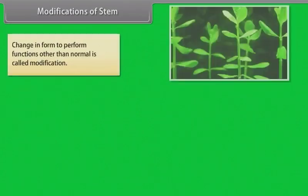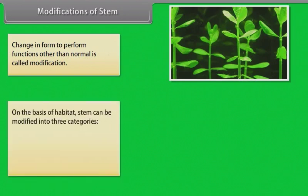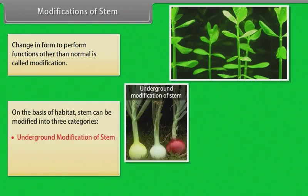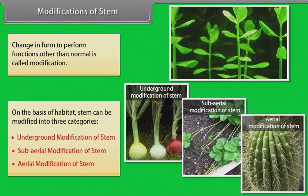Change in form to perform functions other than normal is called modifications. On the basis of habitat, stem can be modified into three categories: underground modification of stem, sub-aerial modification of stem, and aerial modification of stem.